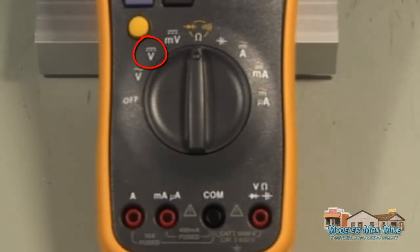So for example if you wanted to test voltage you would turn the dial to the voltage selection and then plug your red lead into the voltage port.